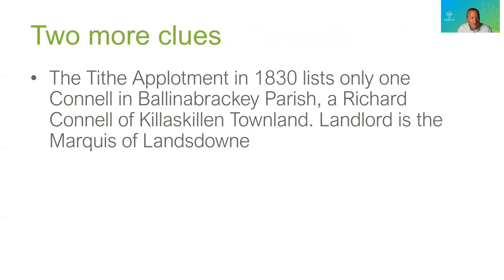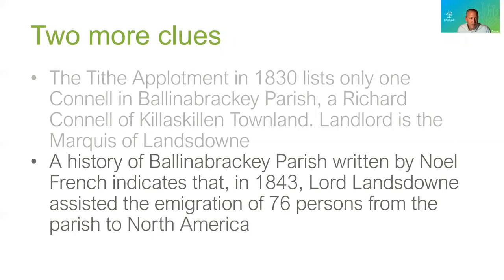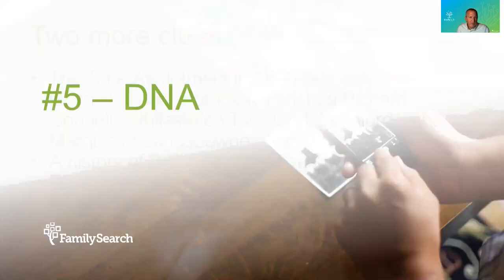Richard fits perfectly time-period wise, as does Patrick as far as month, though the year is off — which could be tied to my US sources. At least now I have a family I can attempt to disprove. This family was found using something similar to a surname distribution strategy. The tithe applotment of 1830 — another surname list covering about 40% of heads of household — lists only one Connell in Bolnebrachie parish: a Richard Connell of Killiskillentown. The landlord is the Marquess of Lansdowne, who may have records of additional Connells in the area. Noel French put together a history of Bolnebrachie stating that in 1843, Lord Lansdowne assisted the immigration of 76 persons from the parish to North America — precisely the time period my people came over.